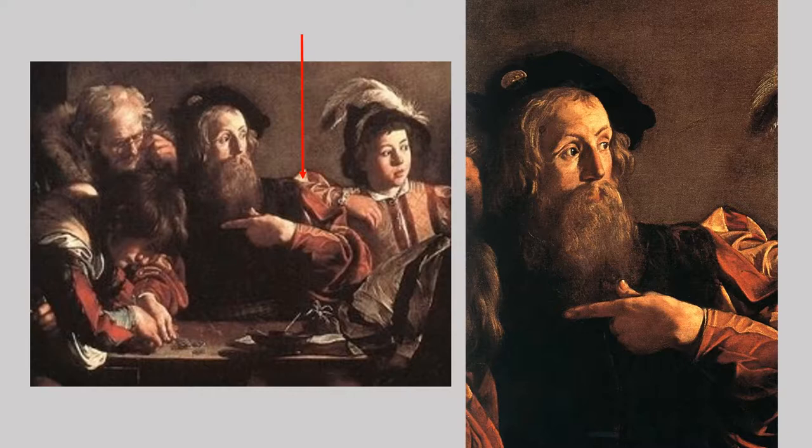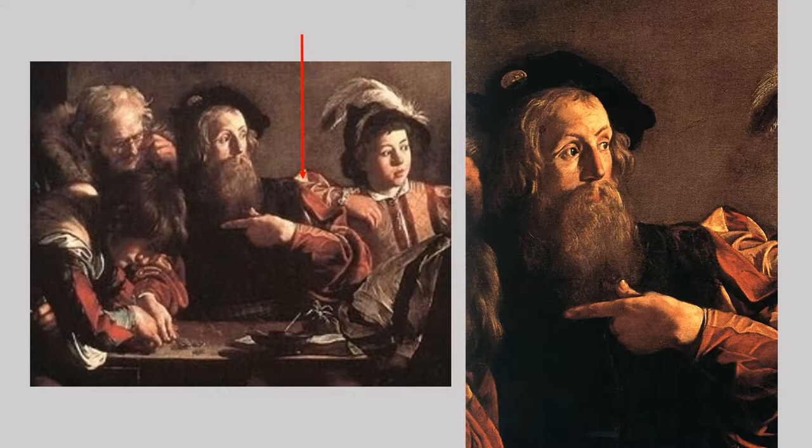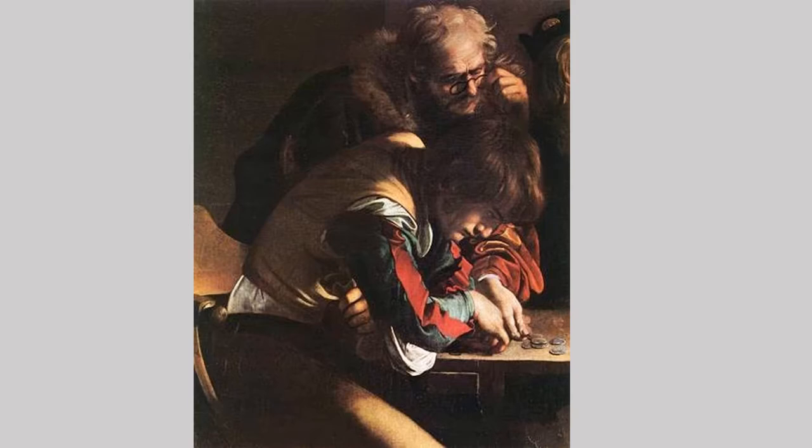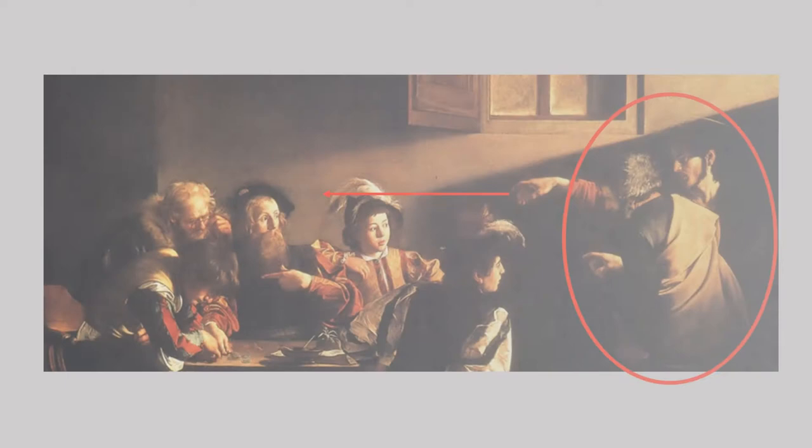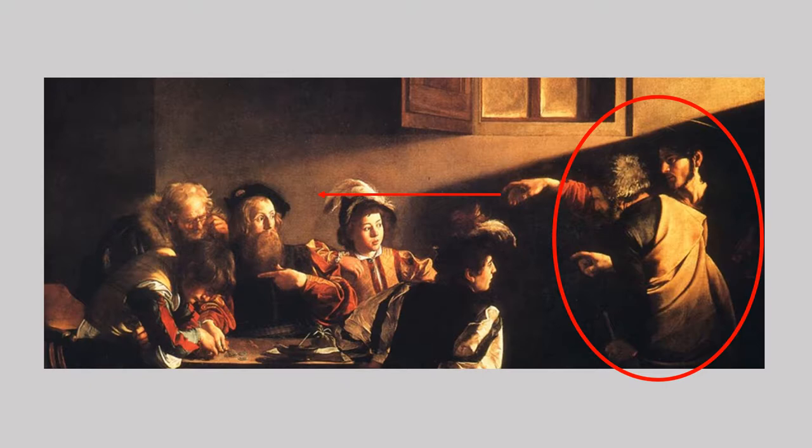He is resting his right arm on his partner's shoulder and is looking at the man on the right. Next to him, on his left, another man is wearing black clothes and is pointing at somebody with his hand while looking in the same direction. At the edge of the table, a man is resting his arms on it and he is looking down. On the right, two men, Jesus and Saint Peter, can be seen. They are standing up and are pointing at somebody on the left.